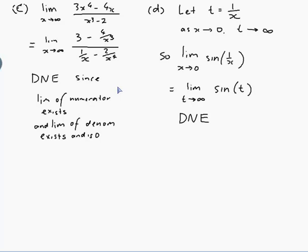It doesn't exist for a different reason than part (c). Part (c) didn't exist because the value got bigger and bigger as x went to infinity. This one doesn't exist because it doesn't go anywhere — it just oscillates back and forth between two numbers.